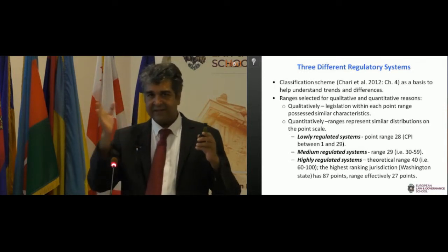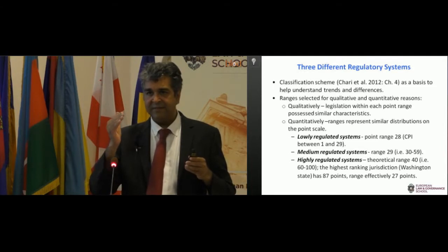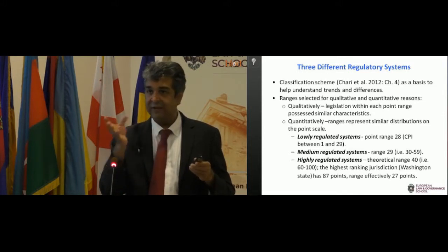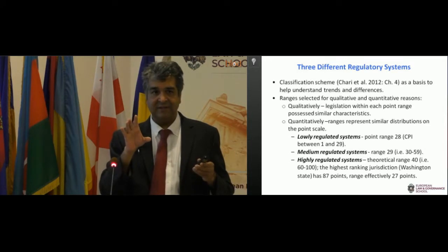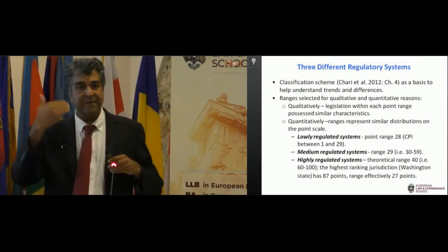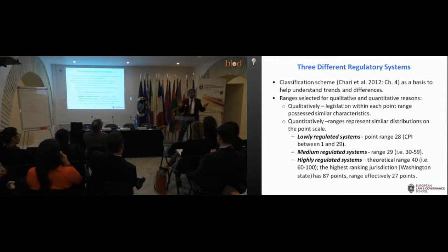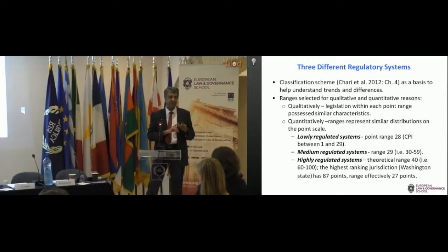In a low regulatory system, you don't have much regulation — you don't ask for much information from your lobbyists, you don't have cooling off periods, and there's no spending disclosure. In a medium system, you have a bit more information given by lobbyists, cooling off periods exist, but you don't have spending disclosures. In a high regulatory system, you get everything: a lot of information given by lobbyists, spending disclosures, and cooling off periods all exist.